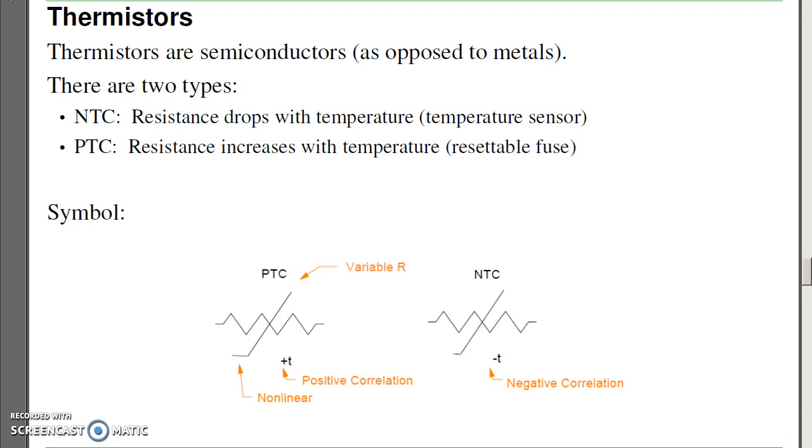The PTC thermistors are your resettable fuses. As the current goes up, I get self-heating. As these get hotter, the resistance goes up even further, and you get this runaway effect. Eventually, the resistance goes to infinity, stopping the current flow. As you turn off the device and let it cool down, the resistance will come back down to the nominal range. If you ever have a device where when you use it, if it starts getting too hot, it turns itself off, wait half an hour, turns itself back on again, that's a resettable fuse, a positive temperature coefficient thermistor.